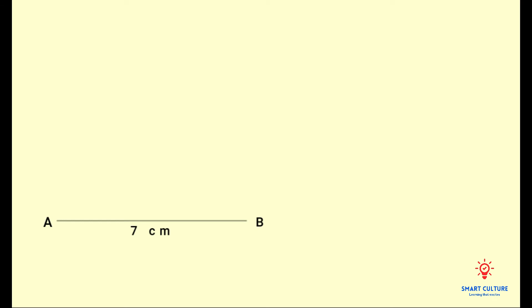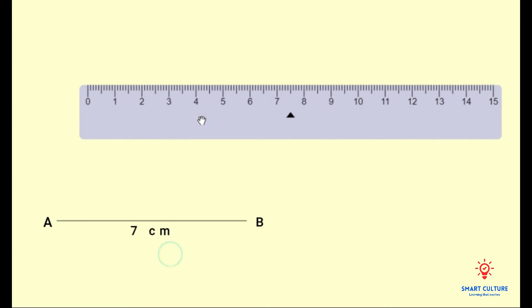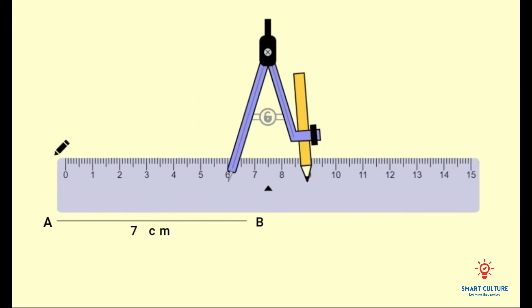We'll call this side AB. Now you can set the compass width to five centimeters.